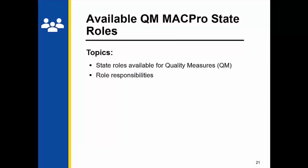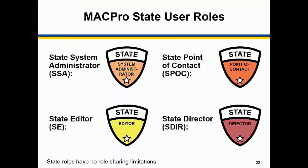Now let's talk about the state roles available for quality measures reporting. This slide lists the MACPro quality measures state user roles, which determine users' available actions and responsibilities. Every state must have at least one assignee in each role with access to the appropriate authorities. It is possible to hold multiple roles — for example, one person can hold both the state editor and state director roles simultaneously. States are highly encouraged to have more than one assignee in each role to prevent disruptions to the workflow in unexpected circumstances.